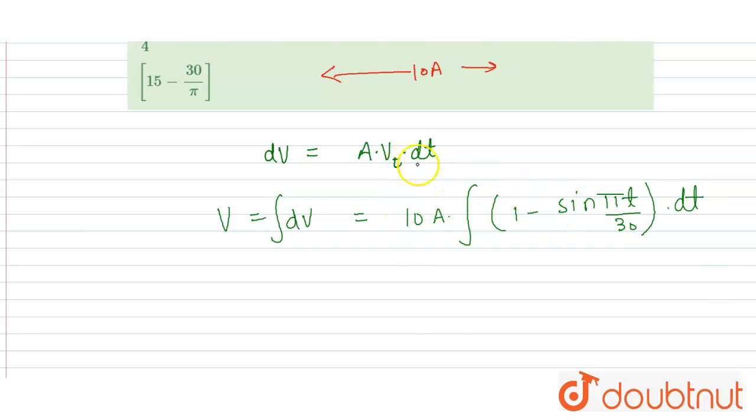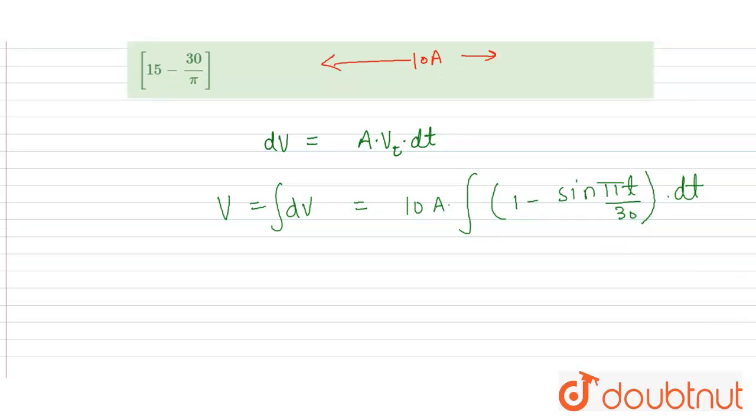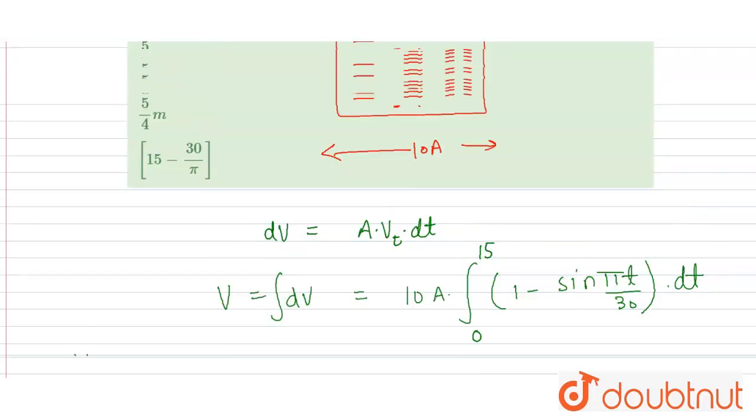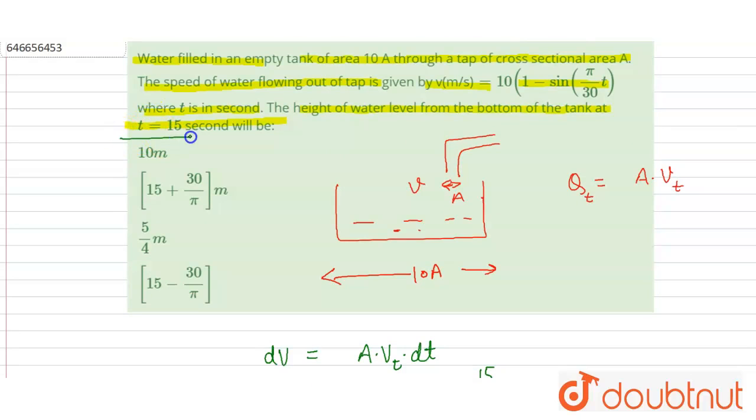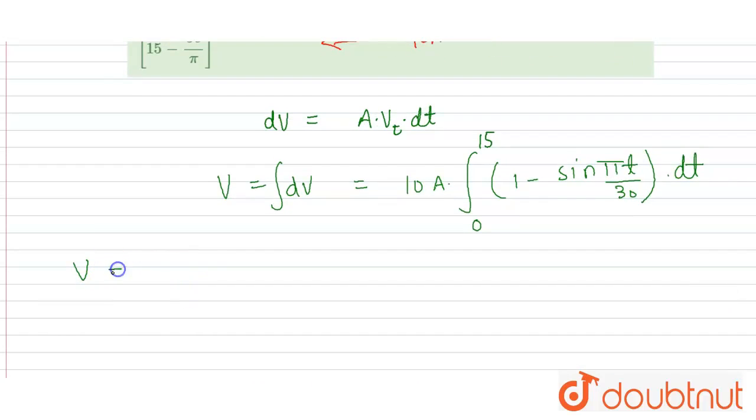Now limits will be 0 to 15. It is given from 0 to t is equal to 15 seconds. So volume v will be equal to 10A into, what will be the integration? Integration will come out t, and integration of sin is equal to minus cos, then it will become plus cos pi t divided by 30, divide by pi by 30, and limits will be 0 to 15.